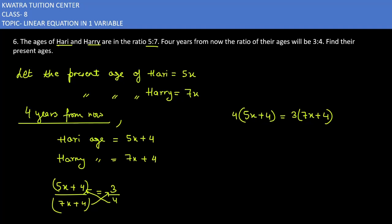First, we will expand the brackets. 4 multiplied by 5x gives 20x. 4 multiplied by 4 gives 16. 3 multiplied by 7x gives 21x. 3 multiplied by 4 gives 12.